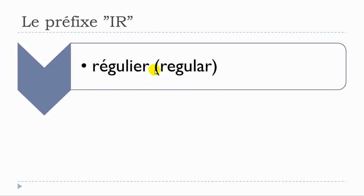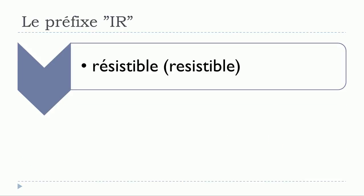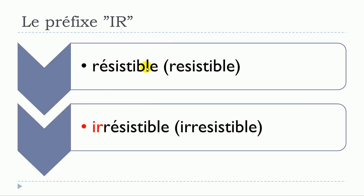The second example is régulier. Remember, they all start with R. Using exactly the same technique, you add IR at the beginning and régulier becomes irrégulier.